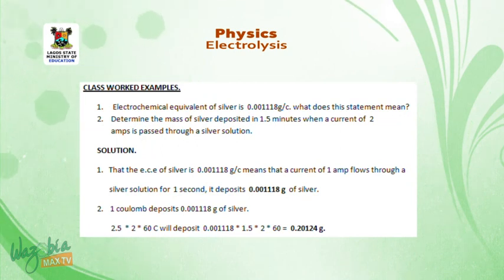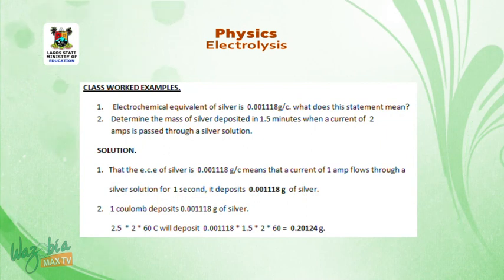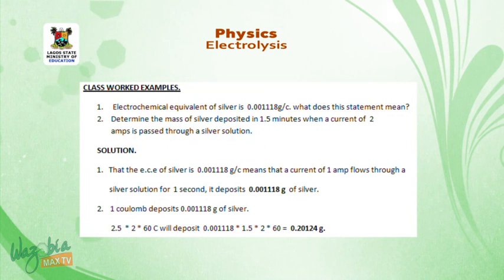Mass = z × I × t = 0.001118 × 2 × (1.5 × 60), which gives us 0.20124 g.